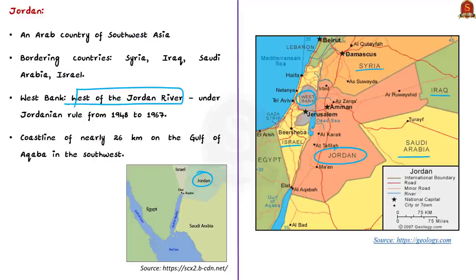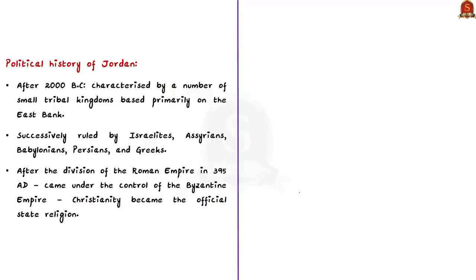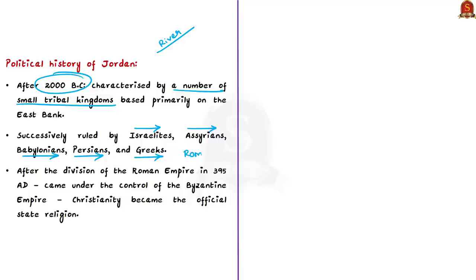The West Bank lies just west of the Jordan River and was under Jordanian rule from 1948 to 1967, after which it was occupied by Israel. Jordan has a small coastline of nearly 26 kilometers on the Gulf of Aqaba in the southwest. From ancient history until the turn of the 20th century, Jordan lacked a clearly defined political and territorial identity. In ancient times it was characterized by small settlements on both sides of the Jordan River; after 2000 BC, a number of small tribal kingdoms emerged primarily on the east bank.